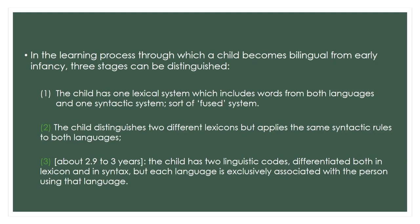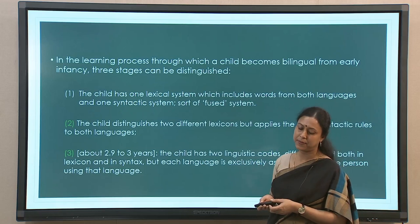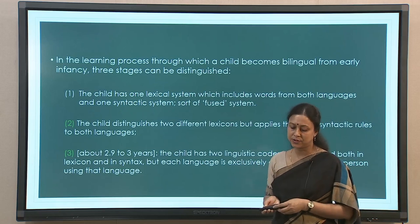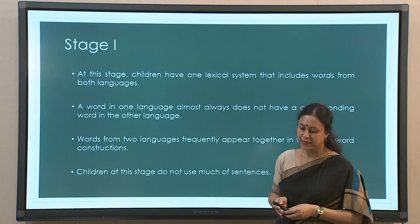This is how the learning process proceeds: three stages. In stage one, there is one lexical system including words from both languages — the child does not understand that a referent X can be called by two names from different languages. That understanding has not yet developed. Stage two and stage three follow as we have seen.